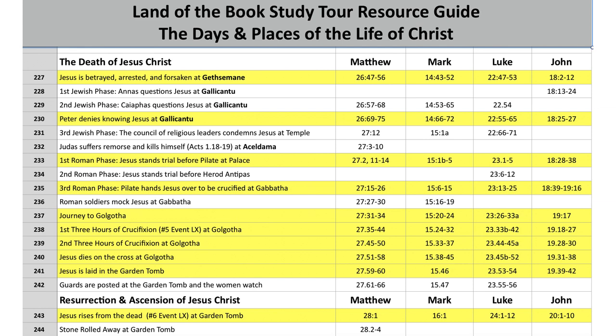The purpose of Bible study is to bring us to Christ, and the purpose Christ came is to give himself as a substitutionary sacrifice. Notice the bold text: Gethsemane. The events occurred in that specific place — everything happened somewhere. That betrayal, arrest, and being forsaken by disciples took place in Gethsemane. After event number 238 — the first three hours of the crucifixion — that's the fifth event in the life of Christ.